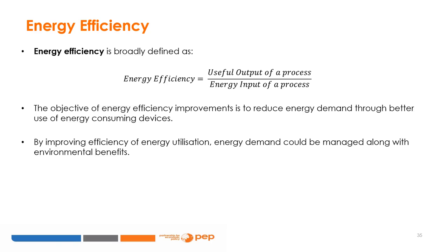Energy efficiency is broadly defined as useful output of a process divided by energy input of a process. The objective of energy efficiency improvements is to reduce energy demand through better use of energy-consuming devices. It is often believed that certain end-use appliances are energy efficient and do not use much energy, when in fact they do, which results in a possible misallocation, a higher demand for inputs, and consequently environmental damages. Such measurements can also be used to identify faulty or malfunctioning equipment that results in energy losses. By improving efficiency of energy utilization, energy demand could be managed along with environmental benefits.